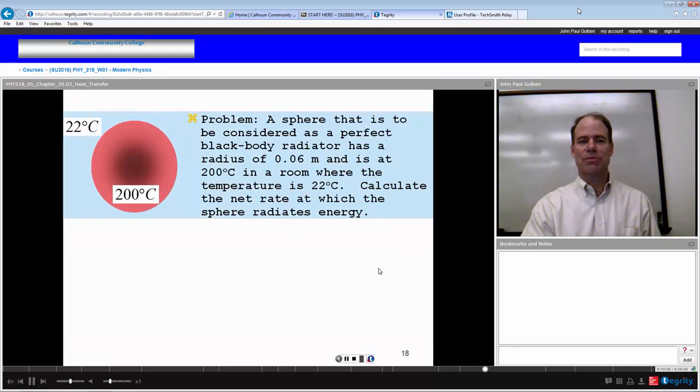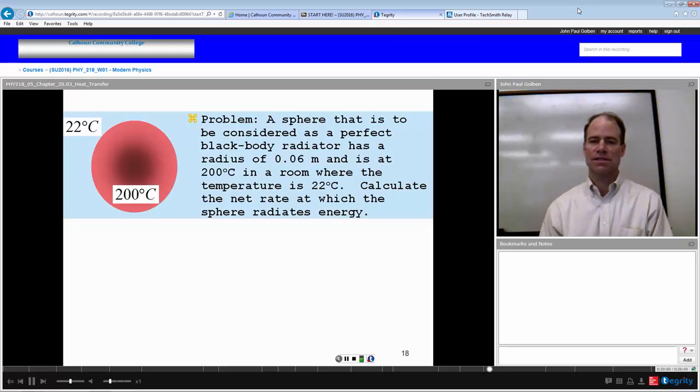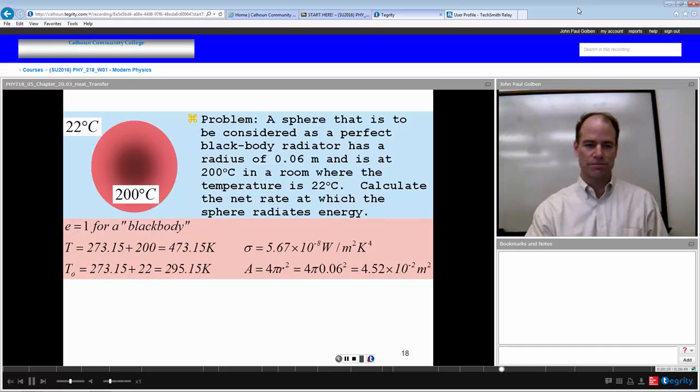Let's try an example. A sphere that is to be considered a perfect black body radiator has a radius of 0.06 meters and is at 200 degrees Celsius in a room where the temperature is 22 degrees Celsius. Calculate the net rate at which the sphere radiates energy. So we want to know not only how much it's radiating out but how much it's taking in and the difference between the two would be the net rate. Now we're given this problem as the object being at 200 degrees Celsius and the surroundings at 22 degrees Celsius, but we know immediately if we're going to use Stefan's law we're going to have to convert these temperatures to Kelvin. It's a black body so we have an emissivity of 1.